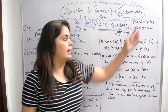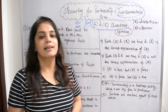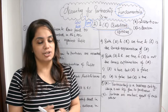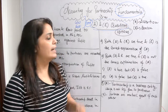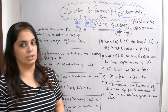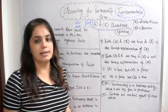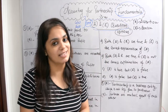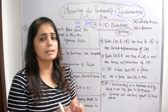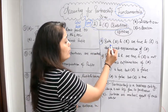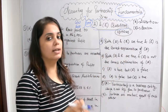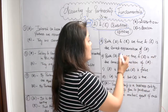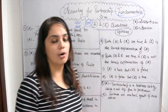A stands for assertion and R stands for reason. Two statements will be given — an assertion and a reason — and for that we have four options. I have put the options here to make these questions easy for you. Option one: both A and R are true, and R is the correct explanation of A.